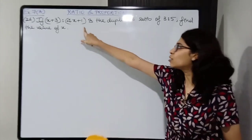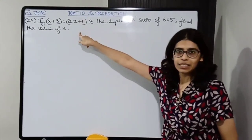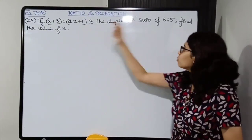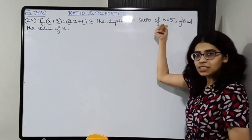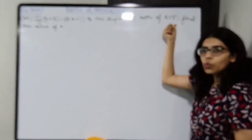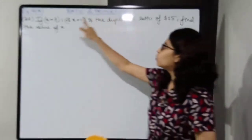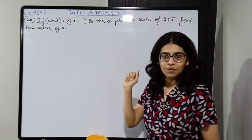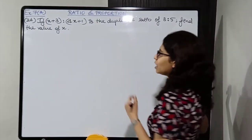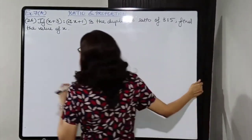Some of you might make the mistake of duplicating the wrong ratio. No — you have to duplicate 3 is to 5, so that square is equal to x plus 3 is to 4x plus 1. Let's start solving.